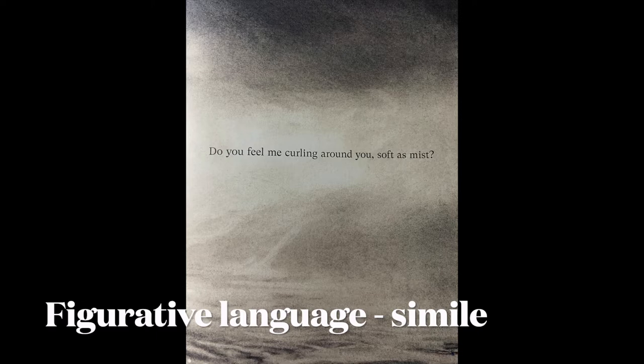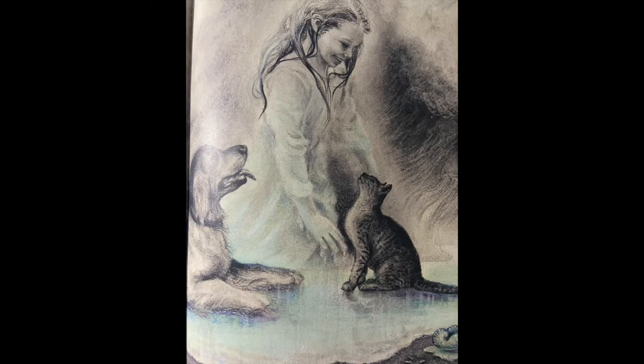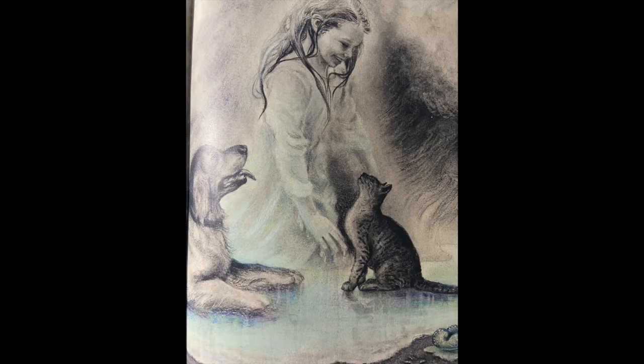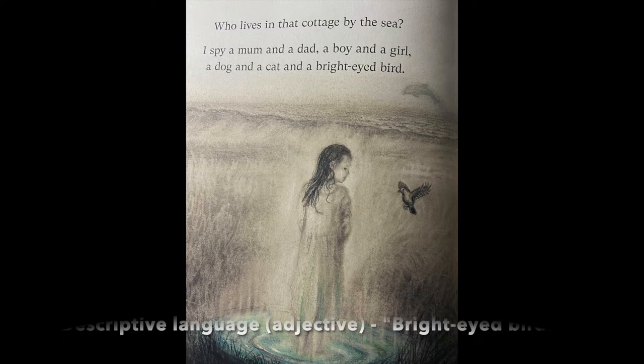Figurative language is used through the simile, 'Do you feel me curling around you, soft as mist?' The use of figurative language enables readers to form illustrative, descriptive mental pictures to engage with the book. Pathos is used through the phrase, 'I wish, I wish it was me,' to highlight the longing and sadness attached to this girl. Descriptive language such as 'bright-eyed bird' adds engagement and depth to the story.